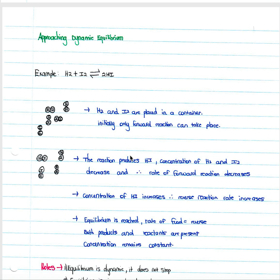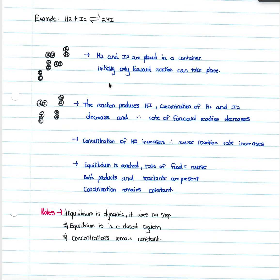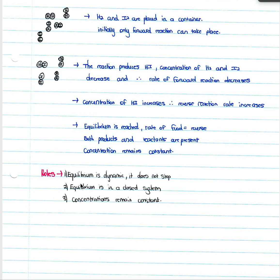At equilibrium, both products and reactants are present — H₂, I₂, and HI are all present — and the concentrations remain constant. Note that this does not mean the concentrations of H₂, I₂, and HI are the same; it just means each concentration remains constant and does not change. Equilibrium is dynamic, meaning the forward and reverse reactions do not stop. It is in a closed system and cannot occur in an open system.